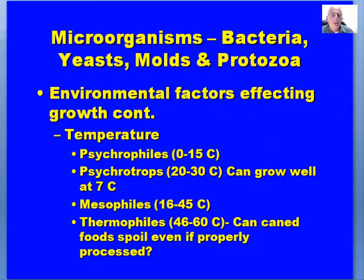Temperature is another environmental factor. Microorganisms are classified into various groups based on optimum temperature for growth: psychrophiles, whose optimum growth temperatures are typically between 0 and 15°C; psychrotrophs, whose optimum growth is at 20 to 30°C but can grow at 7°C; mesophiles, those that grow well at room temperature, 16 to 45°C — this group includes almost all pathogenic microorganisms of concern in or on food products; and thermophiles, which can grow at very high temperatures, 46 to 60°C.